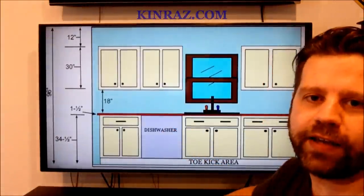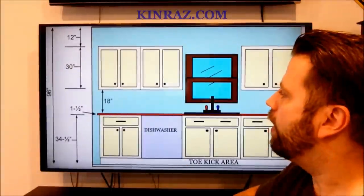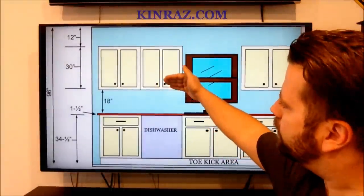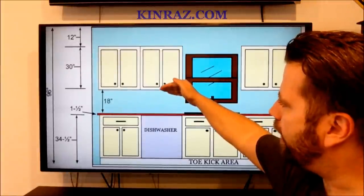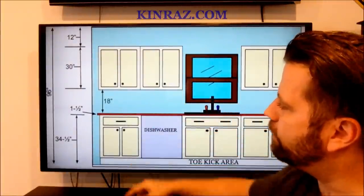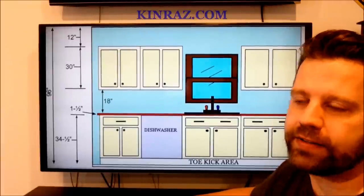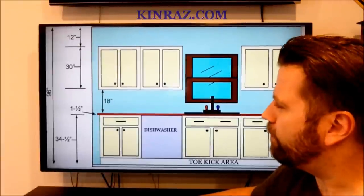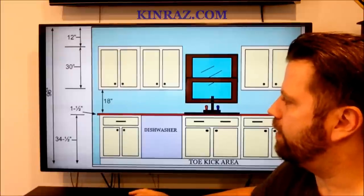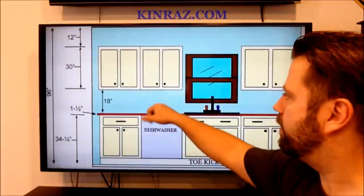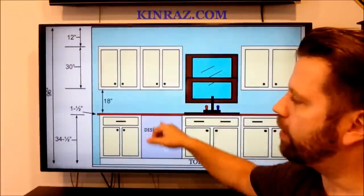However, some kitchens have a shorter cook in the family. Now it is acceptable to lower these kitchen wall cabinets down to where you only have a 15 inch space instead of an 18 inch space. You never really want to go lower than 15 inches on the space between your countertop and your wall cabinets.